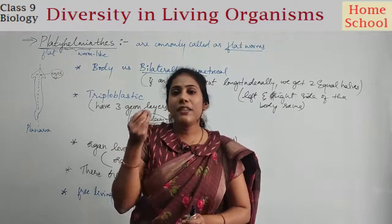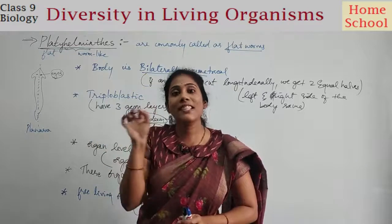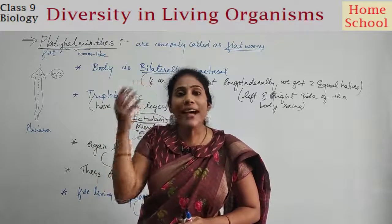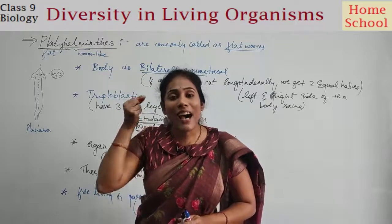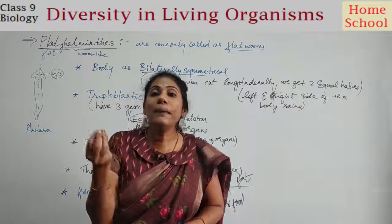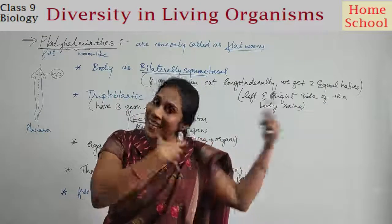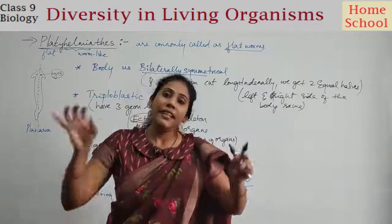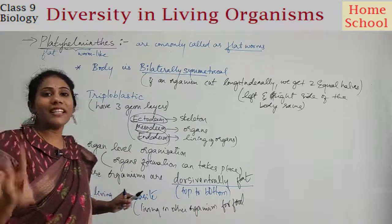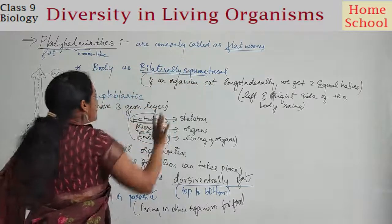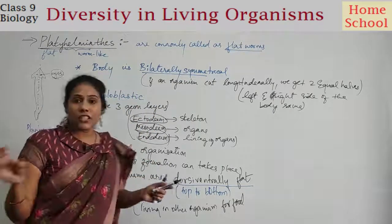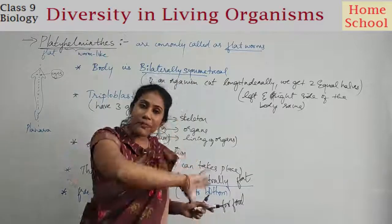For example, lice in our head are parasites because they live in another living organism - humans - for their food and survival. Such organisms are called parasites. So the three main points are: body is bilaterally symmetrical, triploblastic with three germ layers, and organ-level organization starts from this phylum onwards.